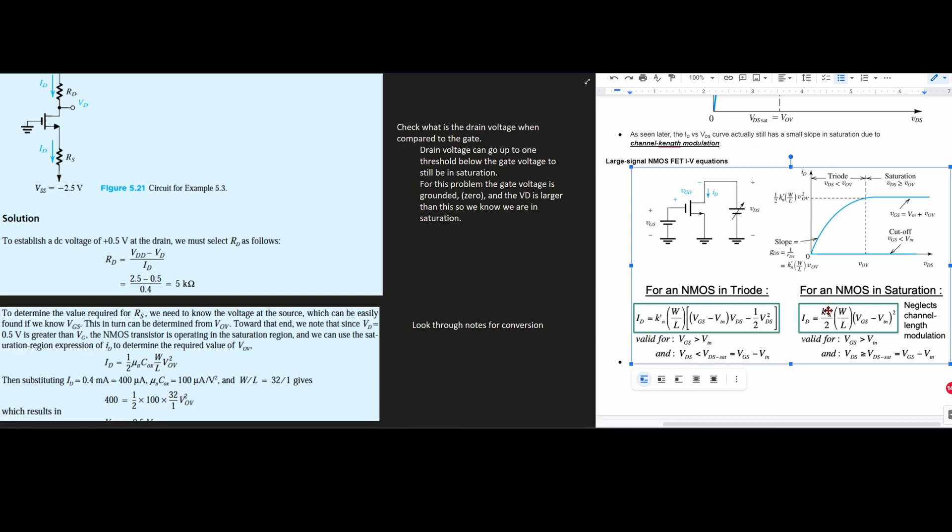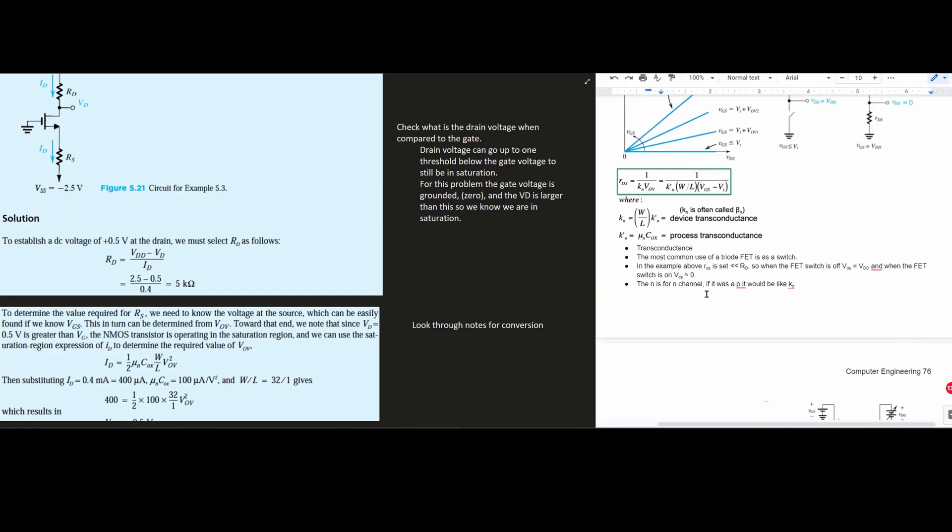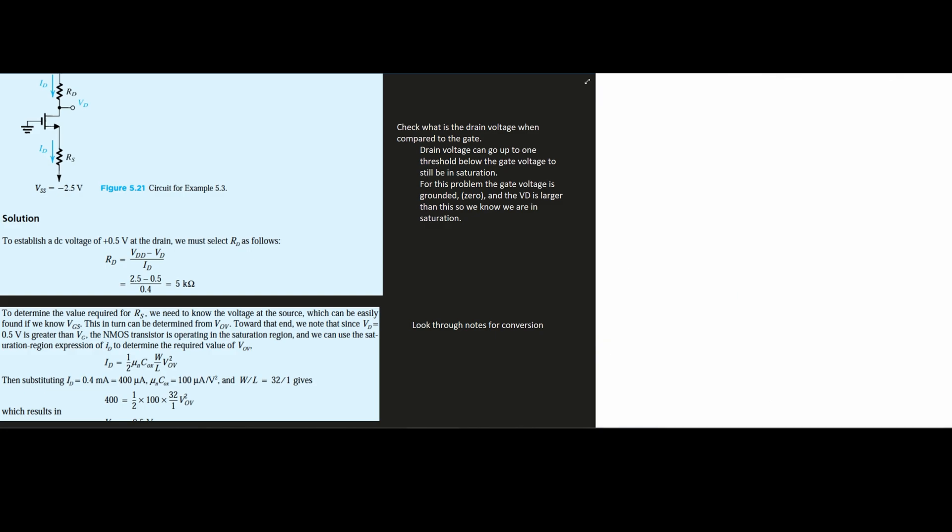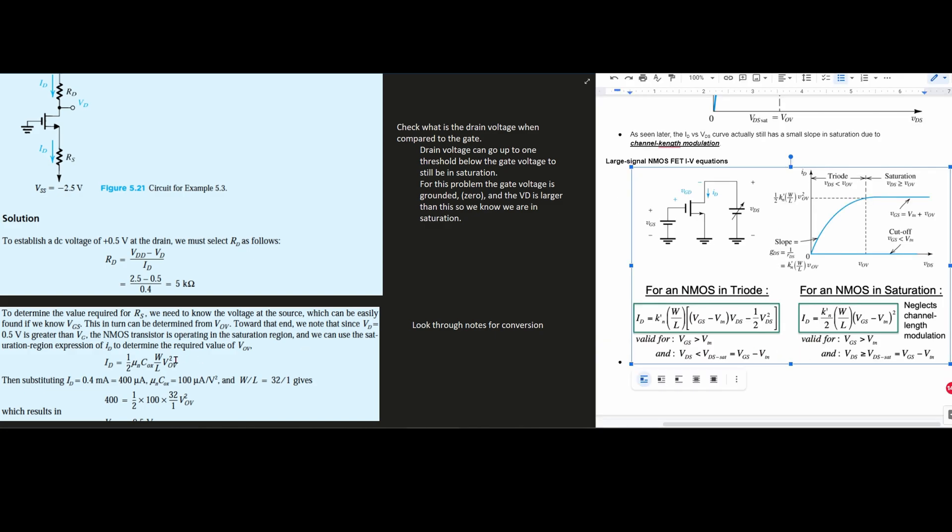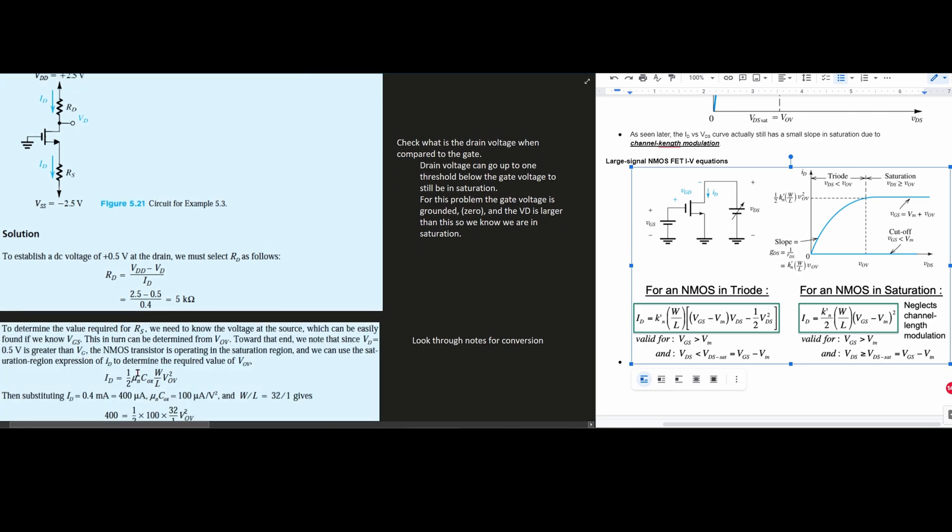Now what about the K apostrophe N? If we look at these notes on page 75, we have K apostrophe N is equal to micro N COX. So that's what we're going to plug in for K apostrophe N. The reason we're doing that is because we were given this micro C aux value.